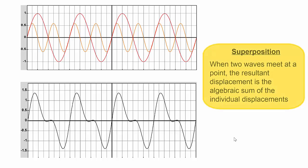The principle of superposition of waves states that when two waves meet at a point, the resultant displacement is the algebraic sum—that is, the sum that includes the sign, positive or negative, of the individual displacements. Let me demonstrate that with these waves.